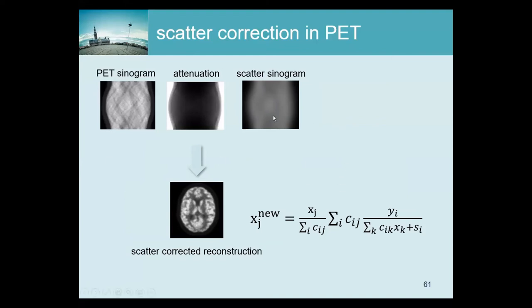It's an underestimation because we overcorrected for scatter, and we overcorrected because the scatter estimate was based on too much activity in the image. So now we're going to have not enough activity — next time too much activity again — but it's oscillating while also converging very quickly. In just a few iterations the thing converges, and more iterations would not change anything.